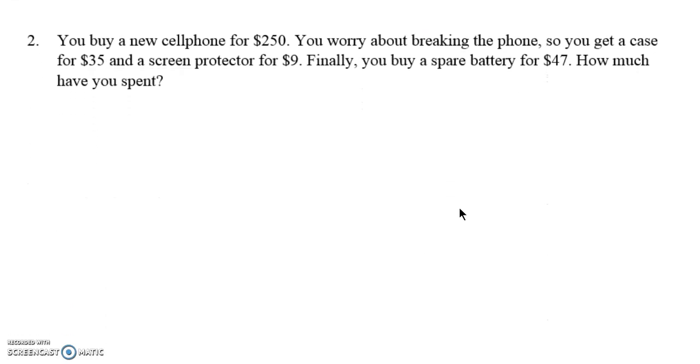For number two, you buy a new cell phone for $250. You worry about breaking the phone. So, you get a case for $35 and a screen protector for $9. Finally, you buy a spare battery for $47. How much have you spent?